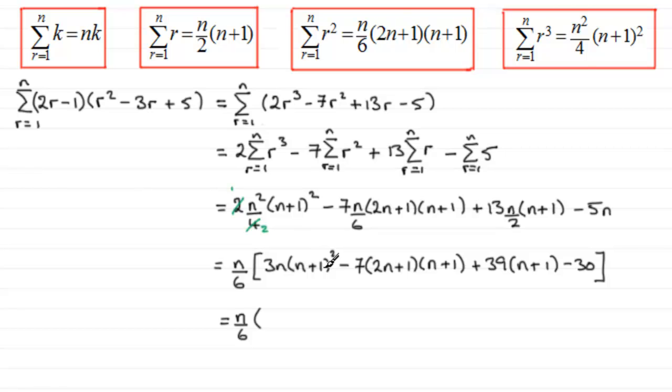Now, n plus 1 all squared is n squared plus 2n plus 1, and if I multiply it by the 3n, I'm going to get 3n cubed and then plus 6n squared and then plus 3n.